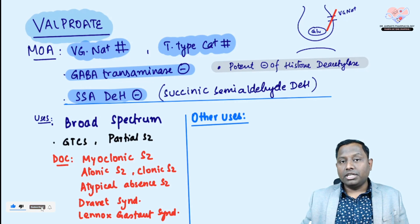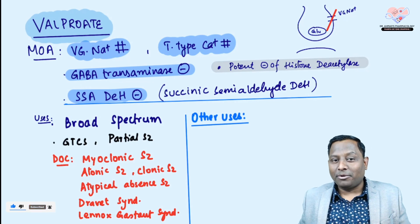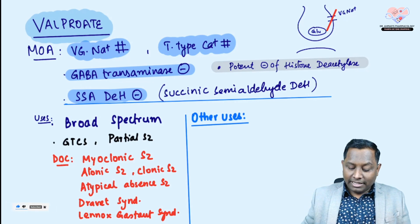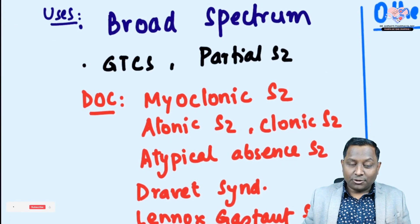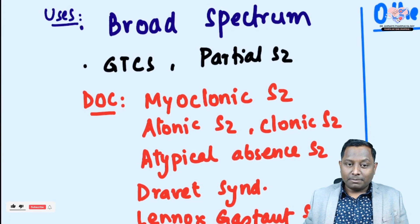Apart from those mechanisms, valproate is also a potent inhibitor of histone deacetylase, which leads to less or no gene transcription involved in epilepsy development. This information is from Goodman & Gilman. Examiners sometimes directly pick the line asking which anti-epileptic drug has a potent inhibiting property of histone deacetylase — the answer is valproate.